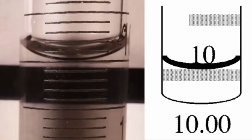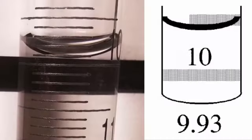In the next example, the meniscus sits at the top of the 10.00 marking, therefore the reading is 10.00. In the third example, the meniscus sits approximately half a line width below the 9.90 marking, therefore the reading is 9.93.